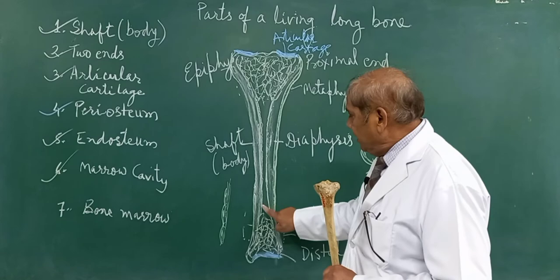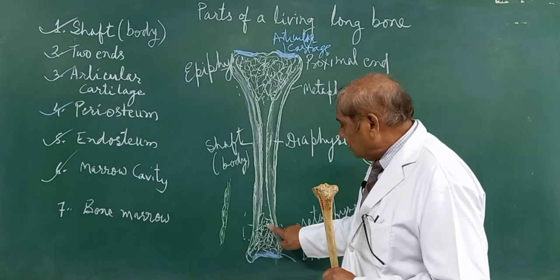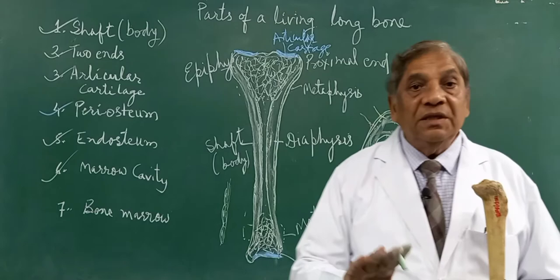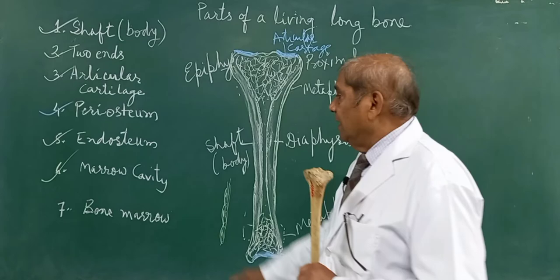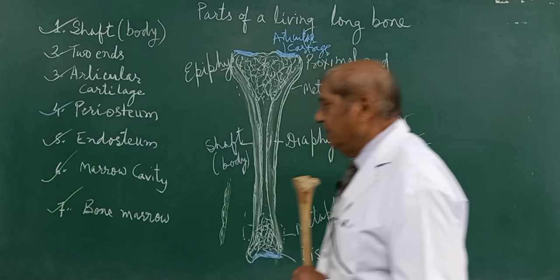This cavity is called the marrow cavity. The marrow cavity is not only present in the cylindrical shaft, but also these spaces in the spongy bone are called marrow spaces, which are also covered by the endosteum.